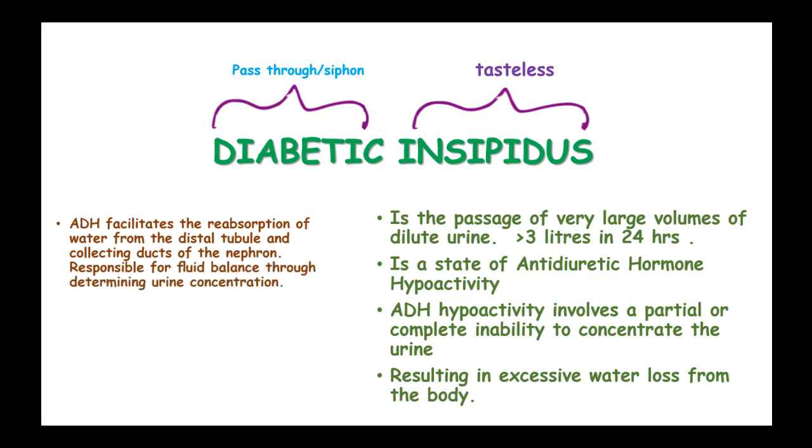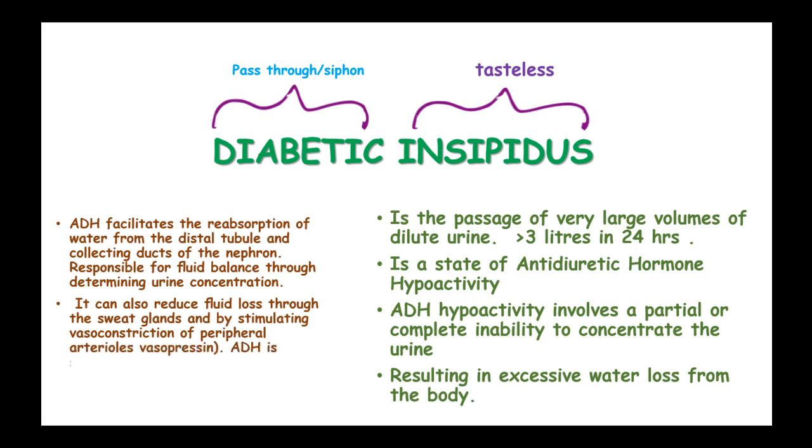ADH is responsible for balance of fluids through determination of urine concentration. It can also reduce fluid loss through the sweat glands and by stimulating vasoconstriction of the peripheral arterioles. That's why it is known as vasopressin.